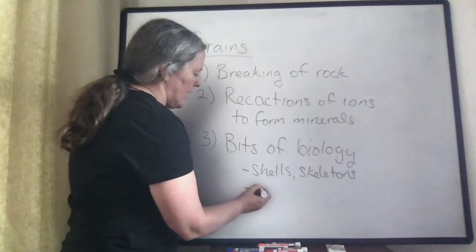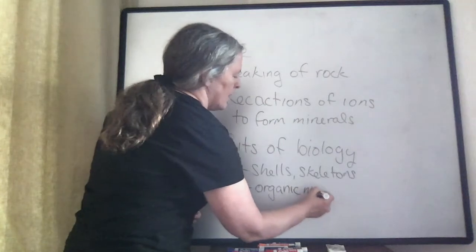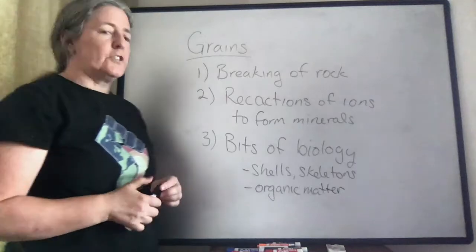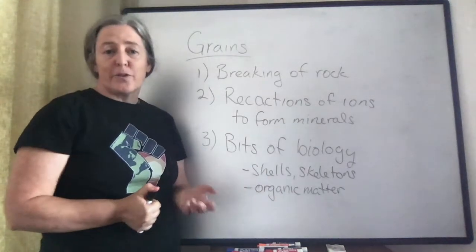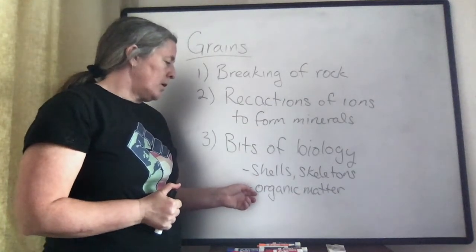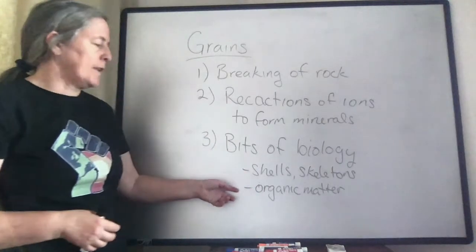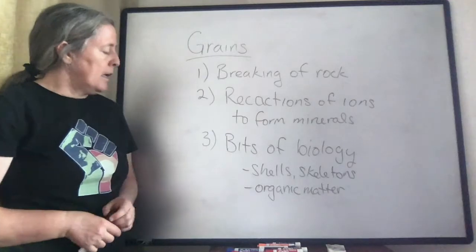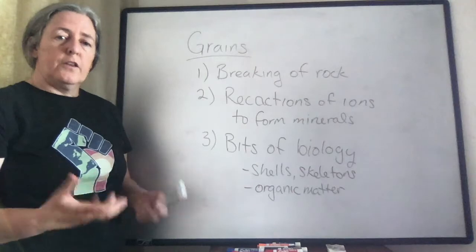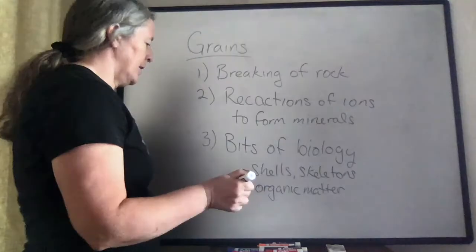We also have pieces of organic matter. This can be pieces of wood, branches, the bodies of organisms. For example, algae can create a lot of organic matter that gets buried. Some of it decays and oxidizes, but some of it can provide the oil and gas that we use to run a lot of our economy.